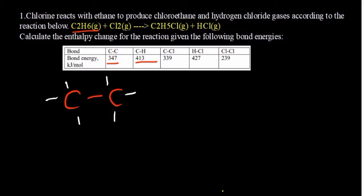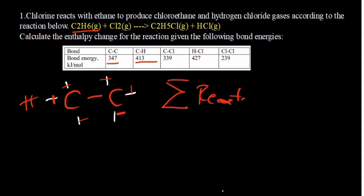The two kinds of bonds are: carbon to hydrogen, which is determined by the number of hydrogen atoms. In this case we have one, two, three, four, five, and six. The formula we use when determining enthalpy from bond energies is: the summation of the bond energies of the reactants minus the summation of the bond energies of the products.